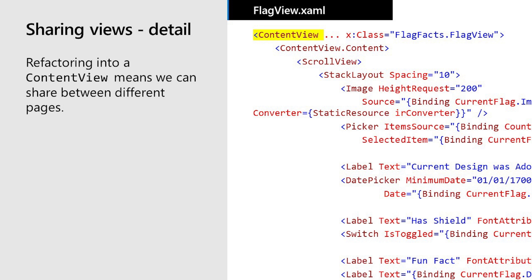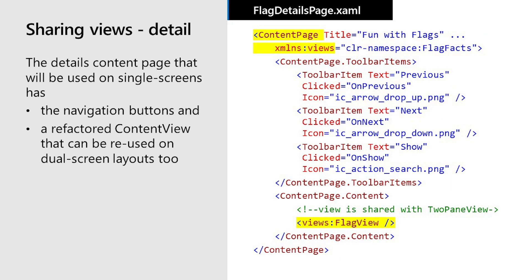Here's the XAML after refactoring. It's in a new file called FlagView. Very few changes were required other than the root element being a content view and moving over the relevant C# code behind as well. We can now reuse this content view back in the details page where it was extracted from, as well as in a dual screen side by side layout. The details XAML now uses the reusable content view we just created. A new XML namespace is declared at the top so we can reference the shared view, and you can see the FlagView element which contains all of the refactored XAML. The up and down toolbar items are still present and will continue to work on single screen devices.